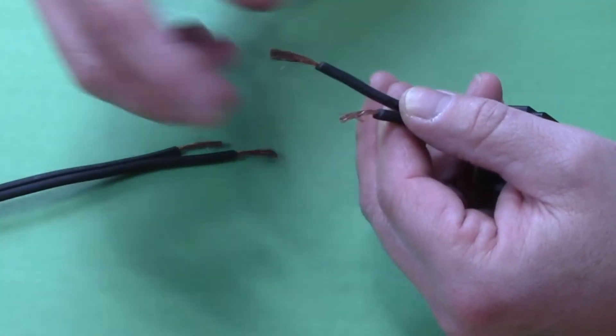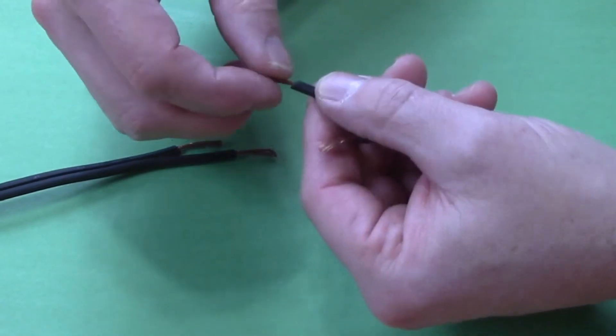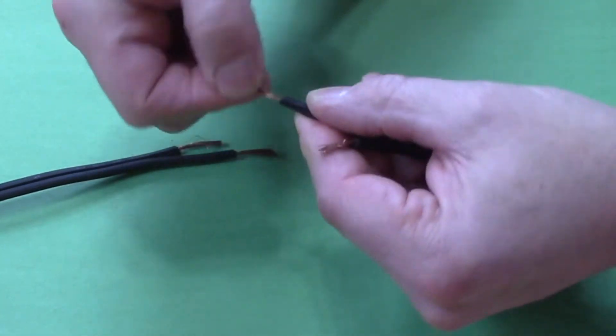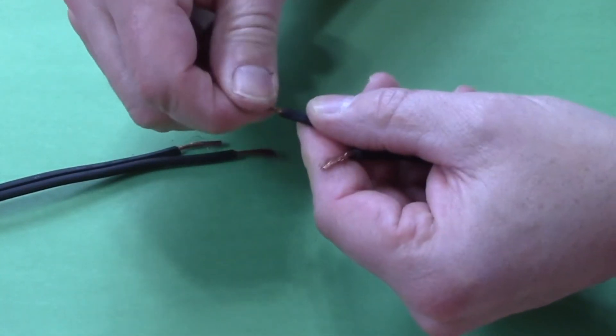Now you want to take each of these wires that you stripped and prepared and just twist them a little bit. Makes them a little easier to work with for the next step.